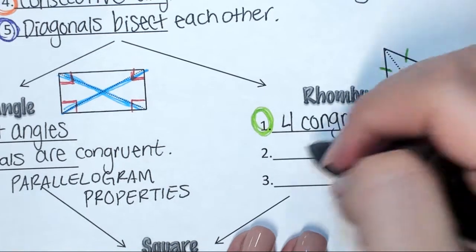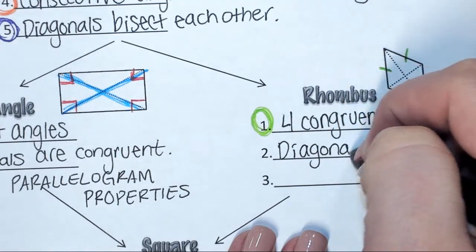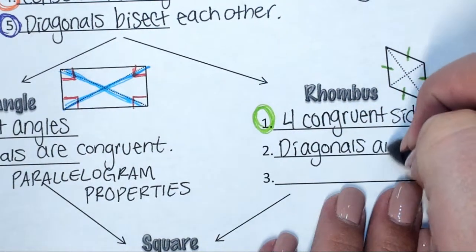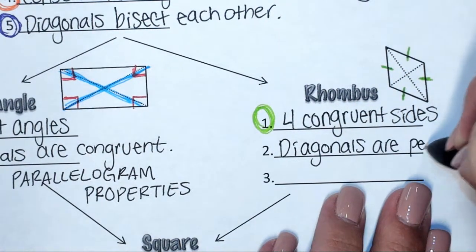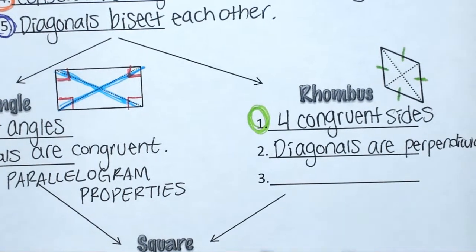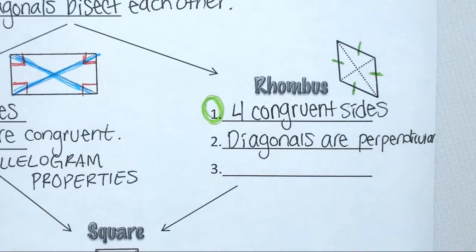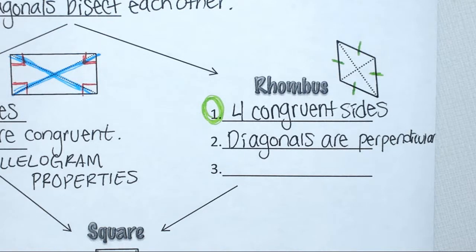Your second property is that your diagonals are perpendicular — what does perpendicular mean? They intersect and they form a 90-degree angle. That's what perpendicular means. Whenever you see that diagonals are perpendicular, that means that they intersect at a 90-degree angle.